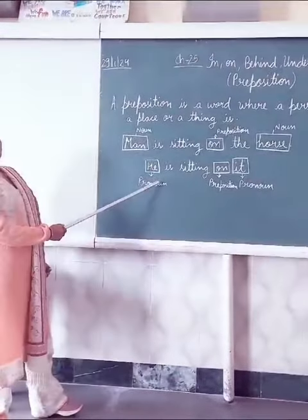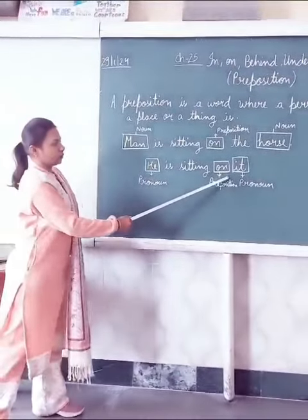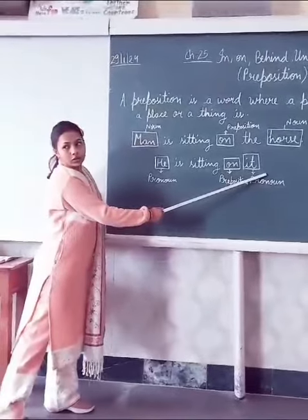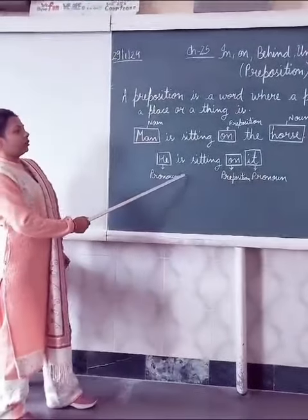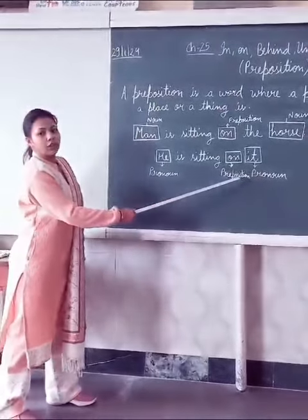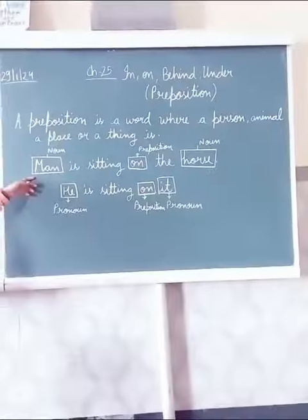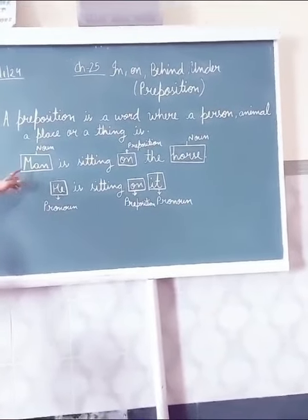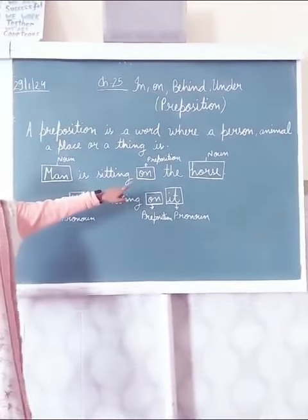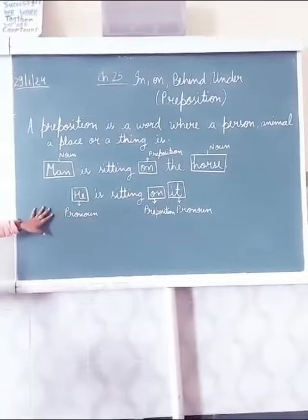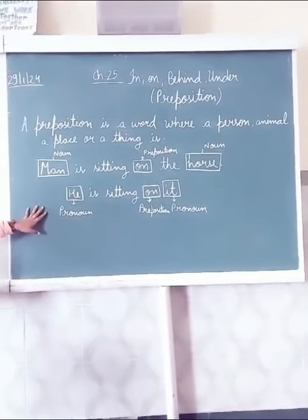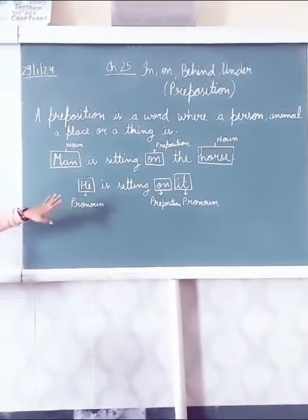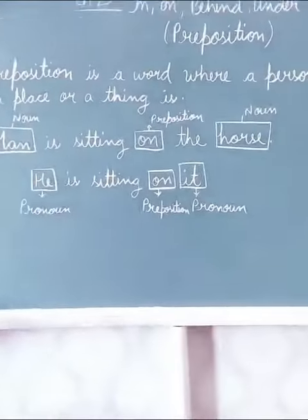The second example is: He is sitting on it. Here, 'he' is a pronoun, 'on' is the preposition, and 'it' is also a pronoun. So where is he sitting? He is sitting on it. Preposition words connect a noun or a pronoun to another noun or pronoun. So now students, let us learn the usage of these prepositions with the help of examples.